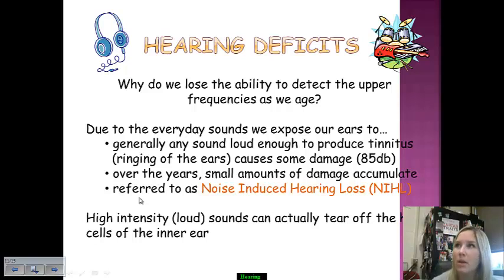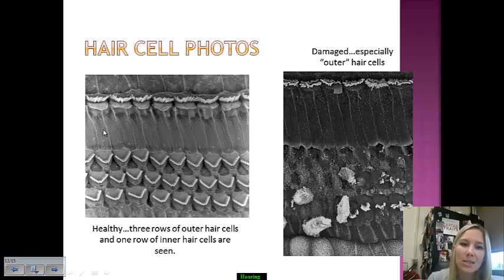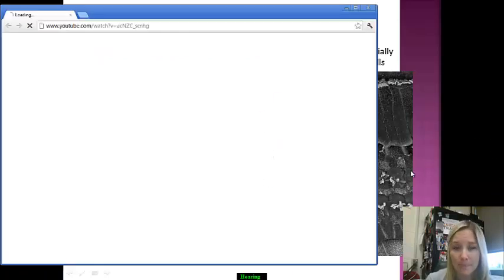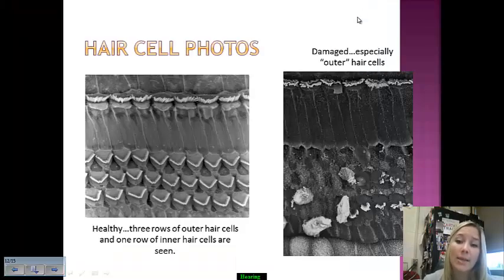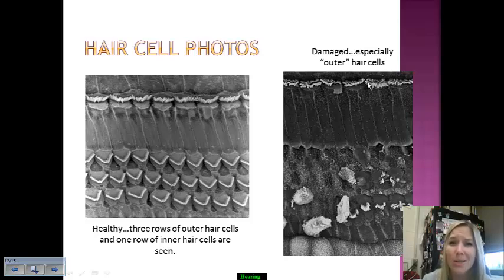Very loud sounds can literally tear off the cilia — the inner ear hair cells. Researchers are concerned for the current generation because of this. A normal row of inner ear hair cells looks healthy, while a damaged inner ear shows severely deteriorated cilia. Anytime you get ringing, buzzing, or a tonal sensation in your ears after loud exposure, that is your indication that permanent hearing loss has occurred.